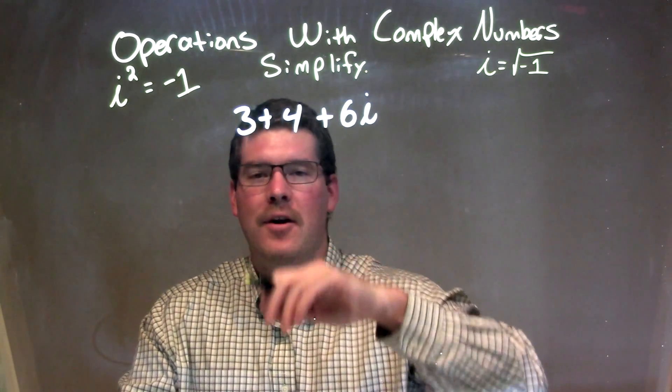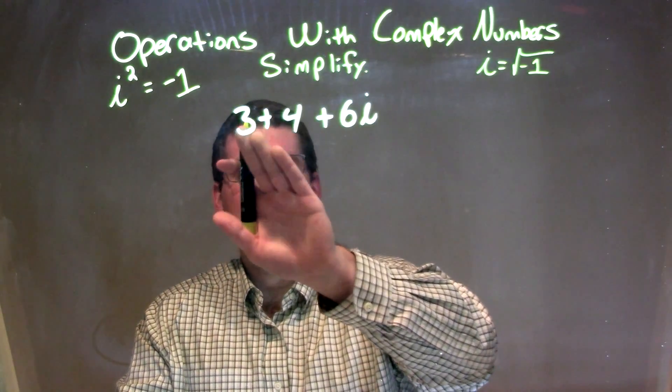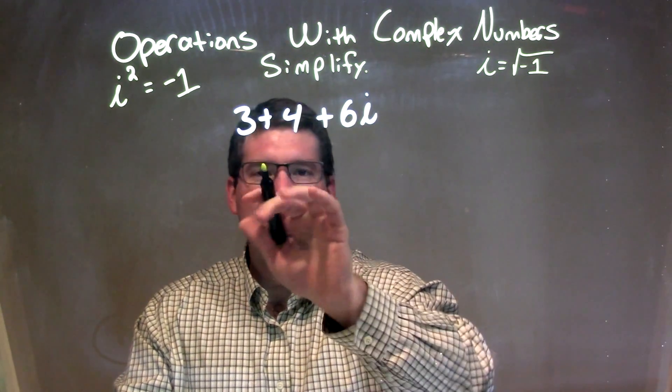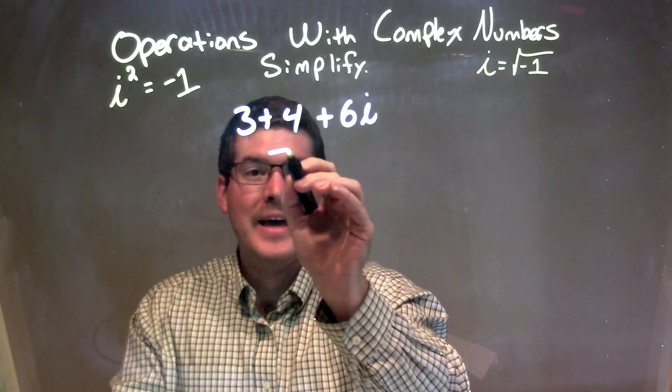We have our real numbers and our imaginary numbers. Our real numbers being 3 plus 4, right? 3 and 4. So that together comes to be a 7.